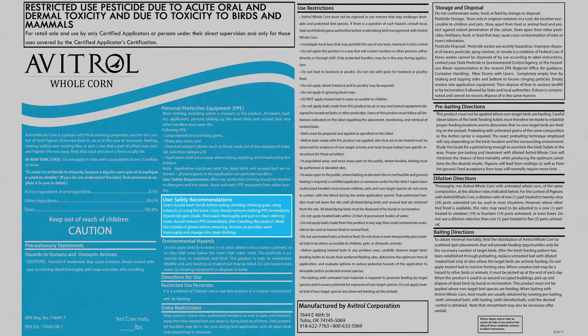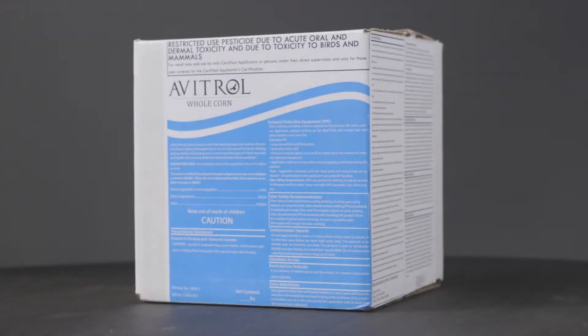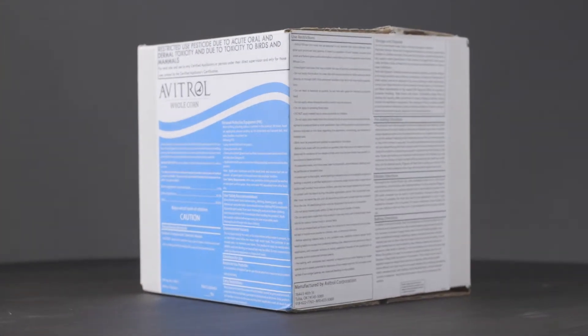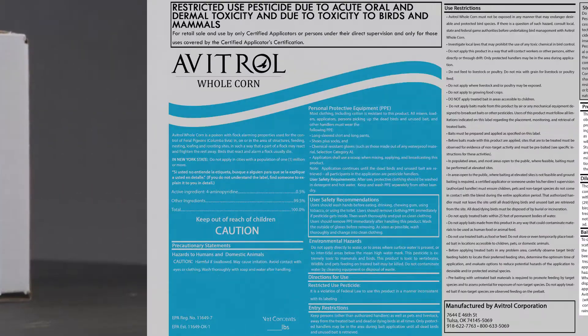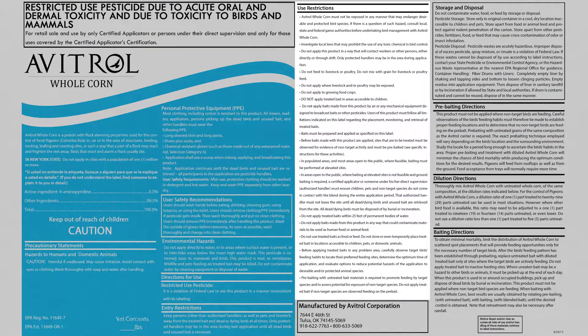Now let's take a look at the back panel. First you're going to find your precautionary statements, and in there you're going to find information on hazards to humans and domestic animals, the first aid statements, as well as environmental hazards. Next, you're going to find your directions for use, and this is going to include information like your use classification statement, misuse and related statements, your worker protection standard, application directions, use restrictions, your endangered species statement, and if applicable, special crop use instructions. You'll also find your storage and disposal instructions, as well as your warranty statement.